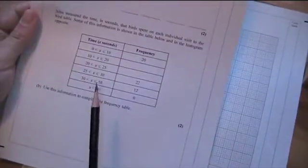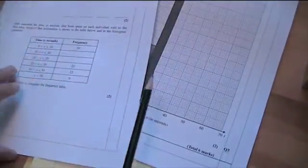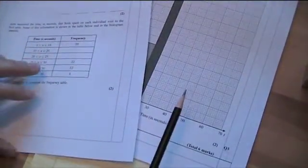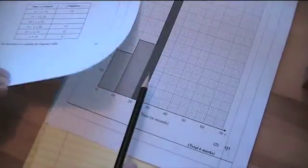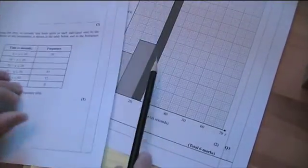On other questions, you'll be given a table and a partially completed histogram. You may be asked just to complete the histogram, to add the rest of the columns on, and you may also be asked to fill in some gaps in the frequency table from the histogram.